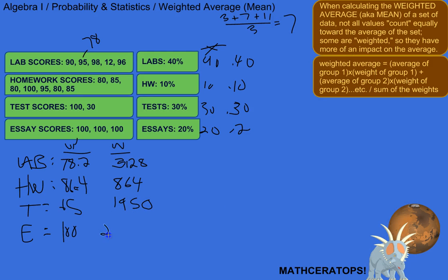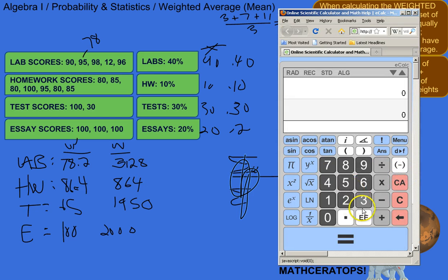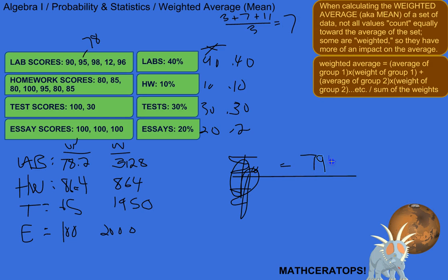Alright. So, now what we do is we sum up the weighted averages. So sum of the weighted. Let's sum. So sum up the weighted averages. So, 3, 1, 2, 8, plus 8, 6, 4, plus 19, 5, 0, plus 2,000. So, let me just double check. 7,942.